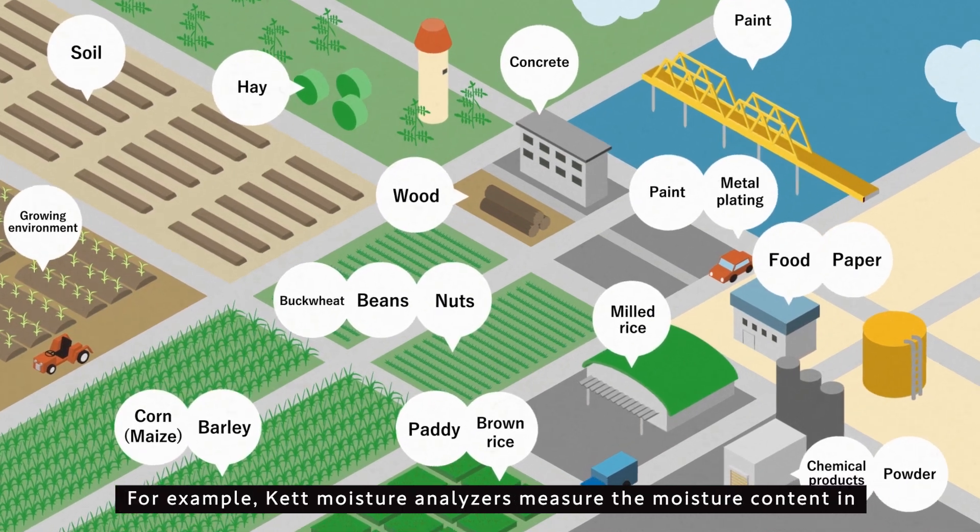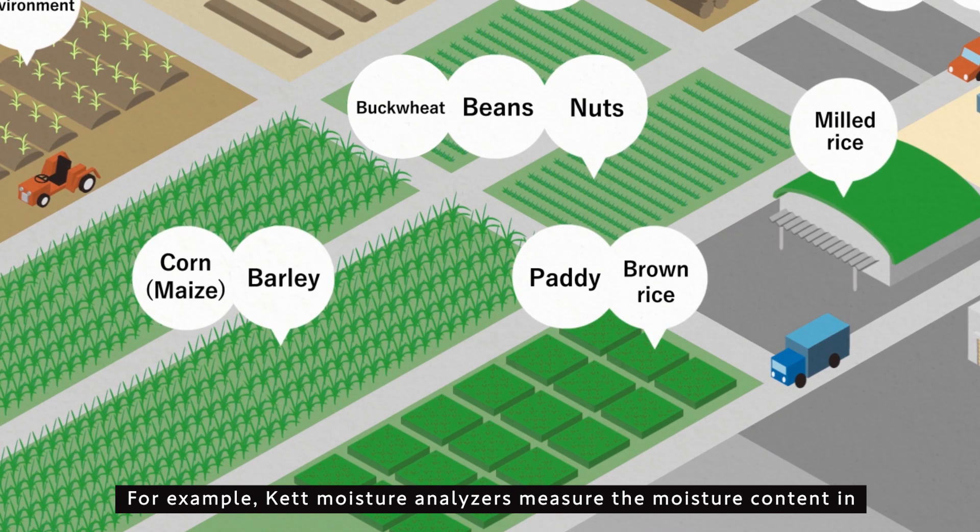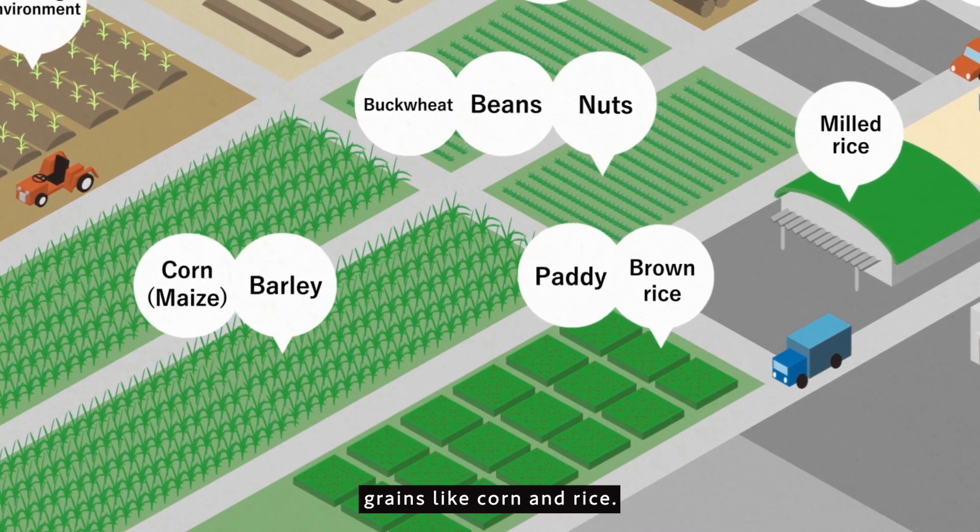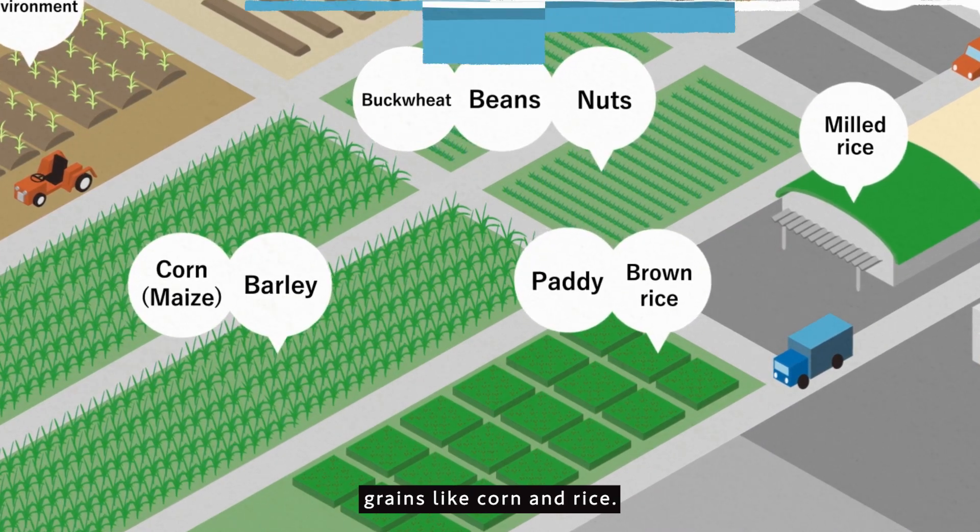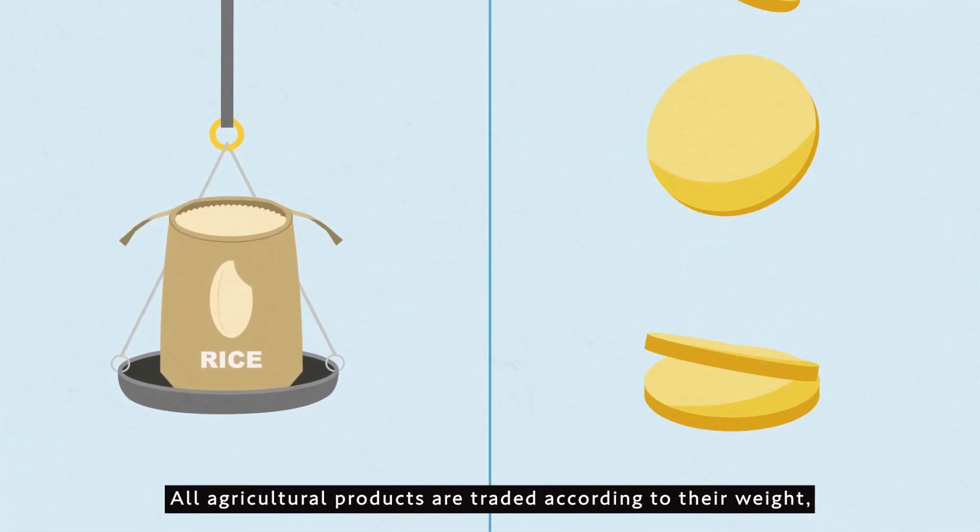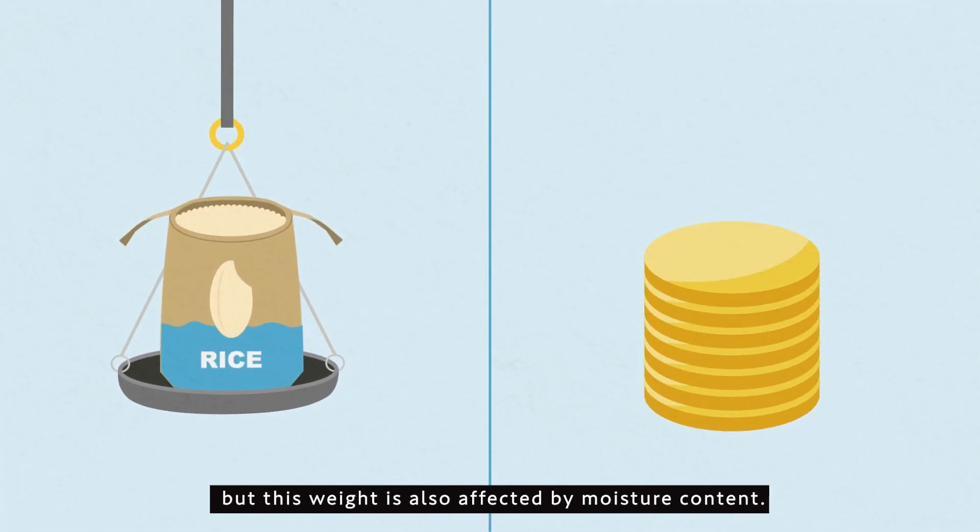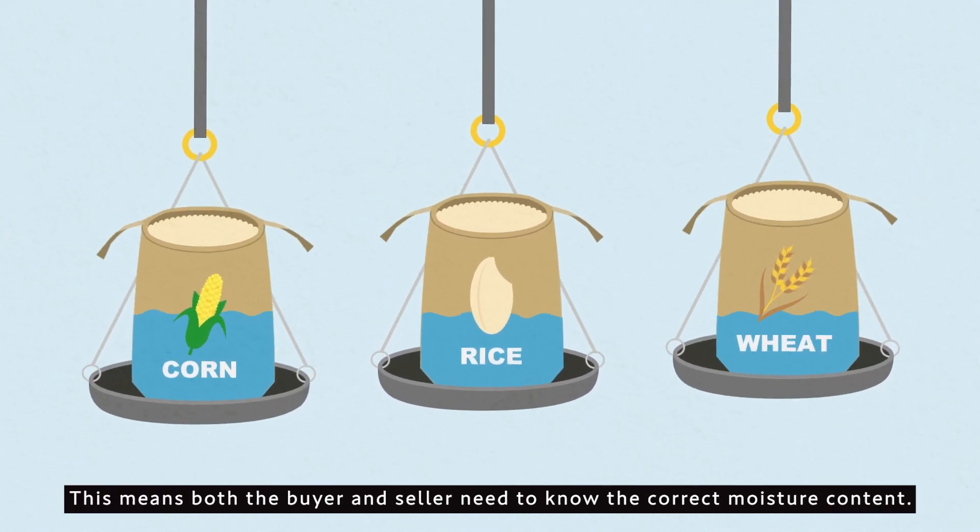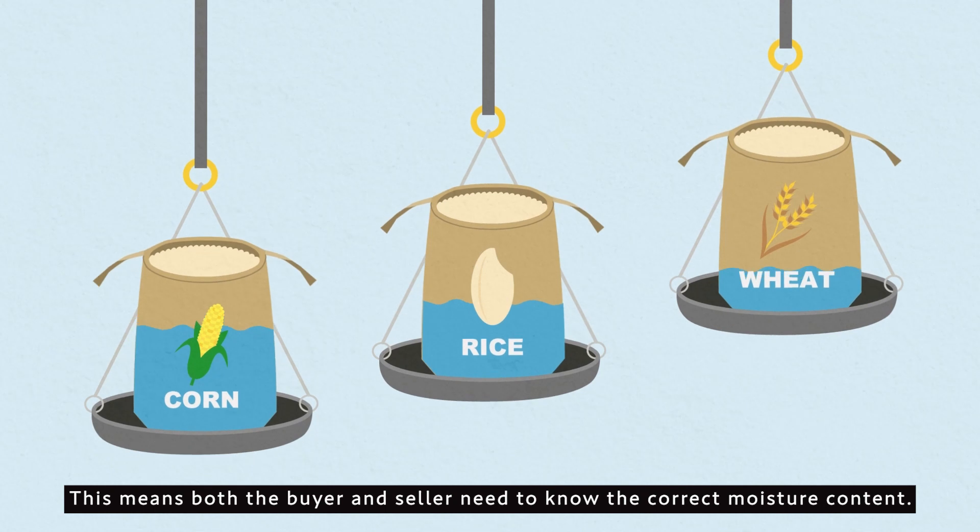For example, Kett Moisture Analyzers measure the moisture content in grains like corn and rice. All agricultural products are traded according to their weight, but this weight is also affected by moisture content. This means both the buyer and seller need to know the correct moisture content.